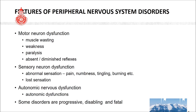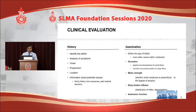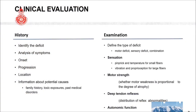Some of these disorders are progressive, disabling, and sometimes fatal, so it is important to identify and categorize them accurately. Like any other condition, the fundamental clinical evaluation is history and examination. In history, we try to identify the deficits by analyzing symptoms — especially the onset and progression of the disease, location of involvement — and further information about potential causes such as family history, toxic exposure, and various past medical disorders.